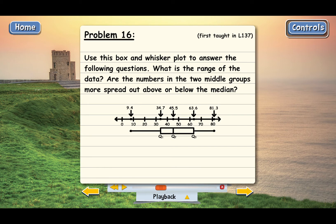What this does is it splits the data up into four equal groups. The first group is from the lowest point to Q1, the second group is from Q1 to Q2, the third group is from Q2 to Q3, and the last group is from Q3 to the largest number.